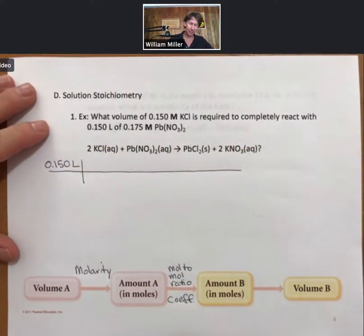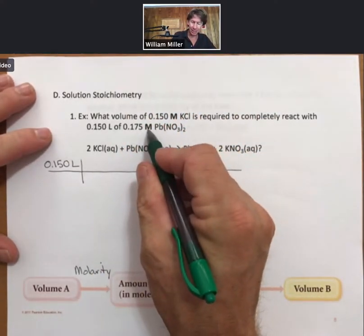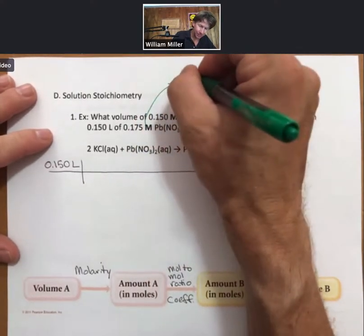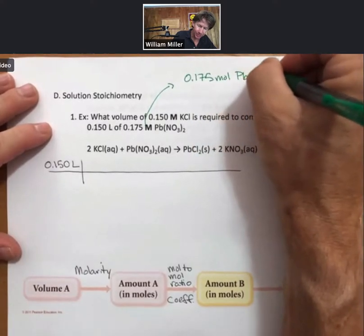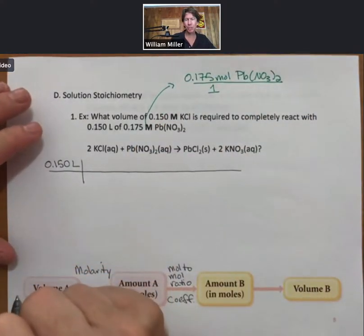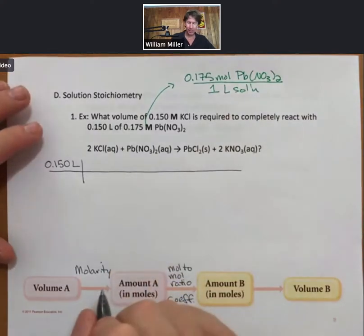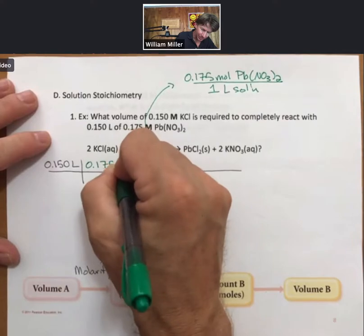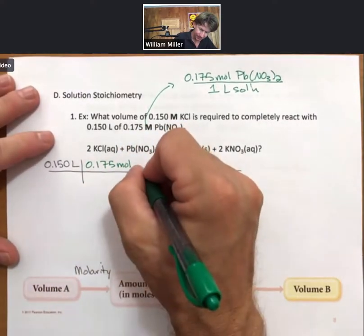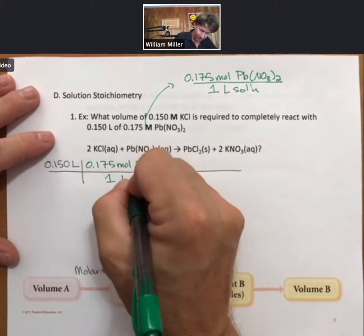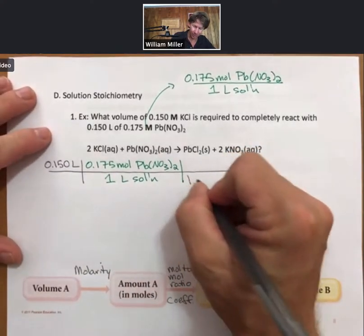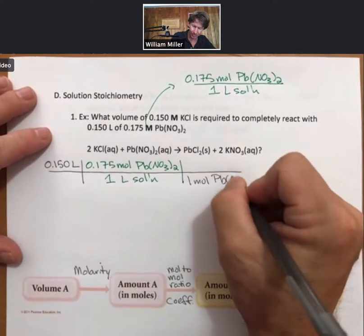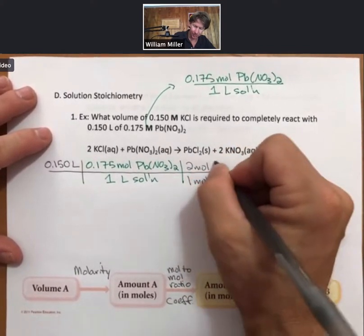And what I'll do is I'll convert for my lead-two-nitrate. Instead of molarity, I know that molarity is really 0.175 moles of Pb(NO3)2 per one liter of solution. And I'll write it just like that in my picket fence. That way my units, my liters cancel. I know what I have moles of, and I know that based on the balanced reaction I need one mole of lead-two-nitrate.